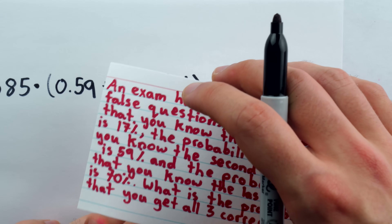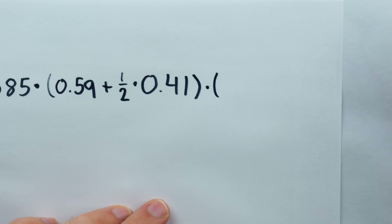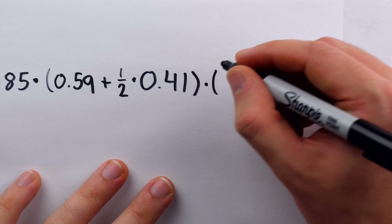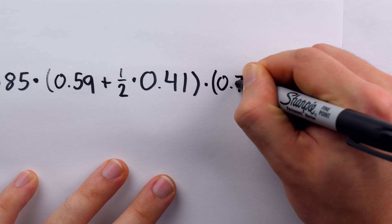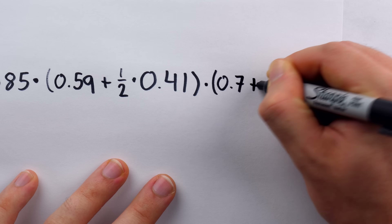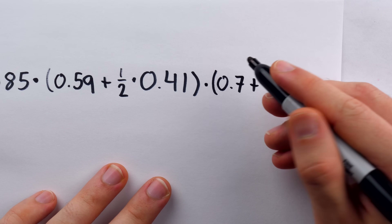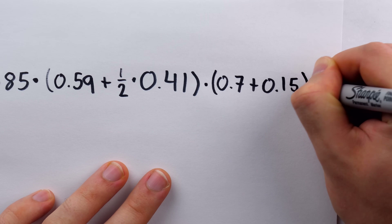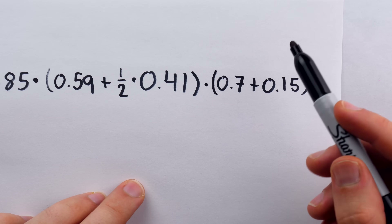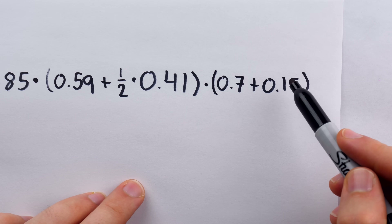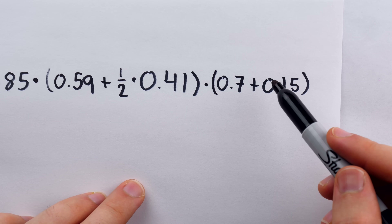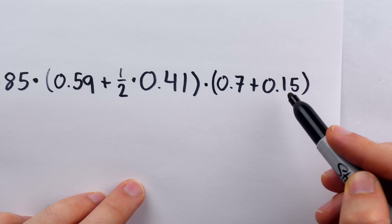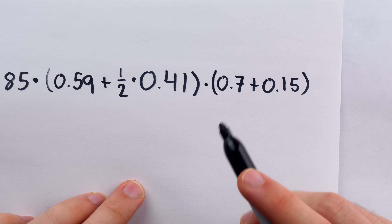There was a 70% chance we know the answer to that question, so we have 0.7, plus half of the remaining 30%, which is 0.15. Even in that 30% case where we don't know the answer, half the time — 15% — we'd just get it right by luck.